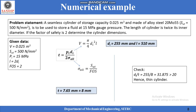Let us consider a numerical example. A seamless cylinder of storage capacity 0.025 m³, made of alloy steel 20 Moly 55 having ultimate tensile strength of 500 N/mm², is to be used to store fluid at 15 MPa gauge pressure. The length of the cylinder is twice its inner diameter and the factor of safety is given. The formula for calculating thickness is t = pi·di / (2σ_all), where σ_all is the allowable stress equal to ultimate tensile strength divided by factor of safety.